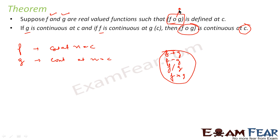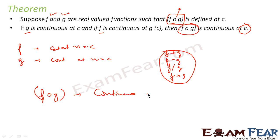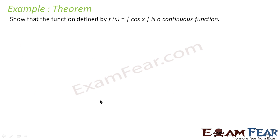If you don't know what f∘g and g∘f are, you can watch the class 11 videos where it is explained. So if f∘g is defined, then f∘g is also continuous at x = c. Please note, if g∘f is defined, then g∘f is also continuous at x = c. We will take some examples to prove this concept.